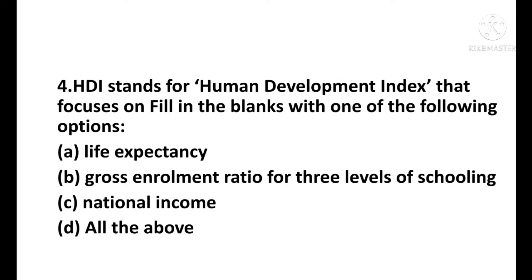Question number 4: What does HDI stand for? That is Human Development Index. Fill in the blanks with one of the following options. Option A: life expectancy. Option B: Gross Enrolment Ratio of the three levels of schooling. Option C: national income. Option D: all of the above. The correct answer is Option D — all of the above, which includes life expectancy, Gross Enrolment Ratio for three levels of schooling, and national income.